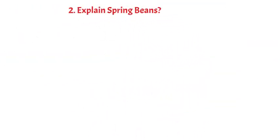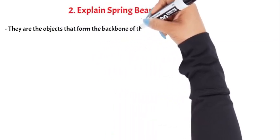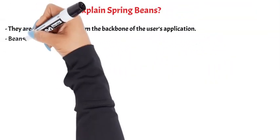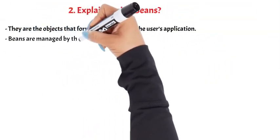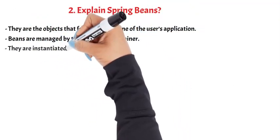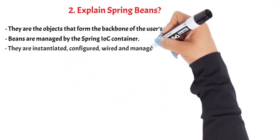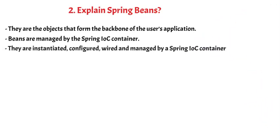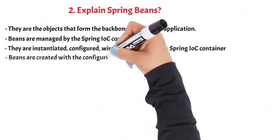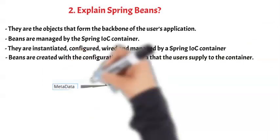Question 2: Explain Spring beans. They are the objects that form the backbone of the user's application. Beans are managed by the Spring IoC container. They are instantiated, configured, wired, and managed by a Spring IoC container. Beans are created with the configuration metadata that the users supply to the container.